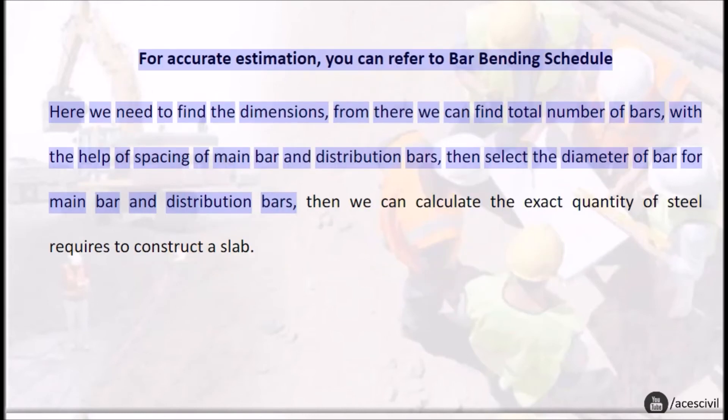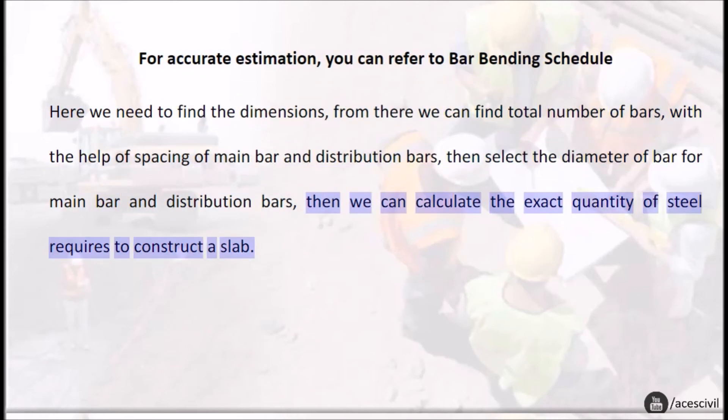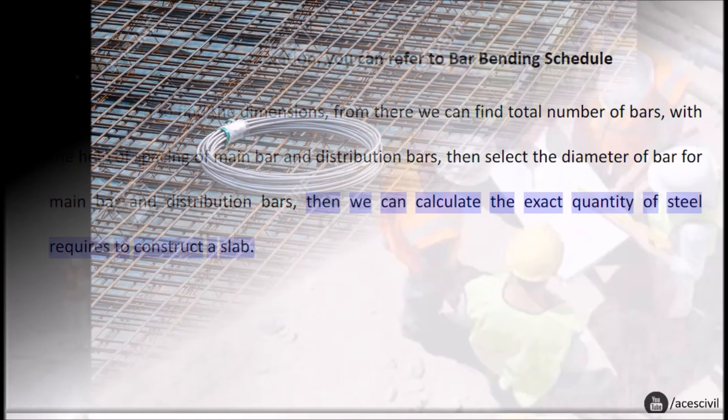For accurate estimation, you can refer to bar bending schedule. Here we need to find the dimensions. From there we can find total number of bars with the help of spacing of main bar and distribution bars, then select the diameter of bar for main bar and distribution bars. Then we can calculate the exact quantity of steel required to construct a slab.